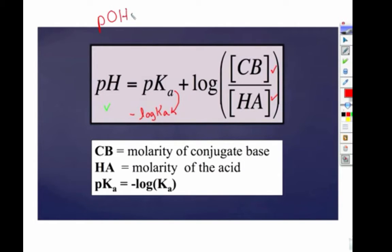Now, the base version of that is pOH is equal to pKb plus the log of your molarity of your conjugate acid over your molarity of your original base. So that would be the base form of that.